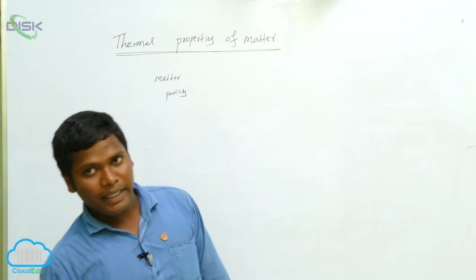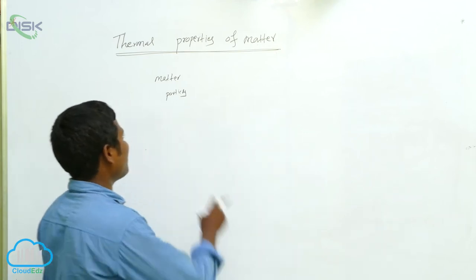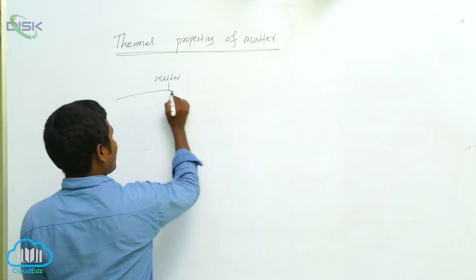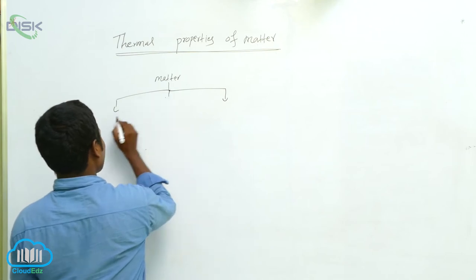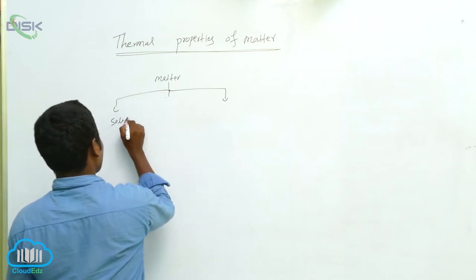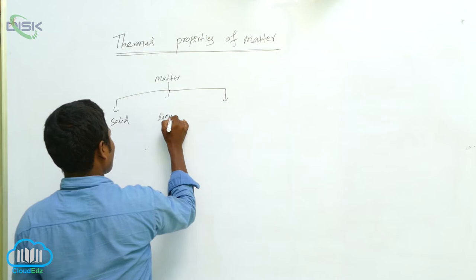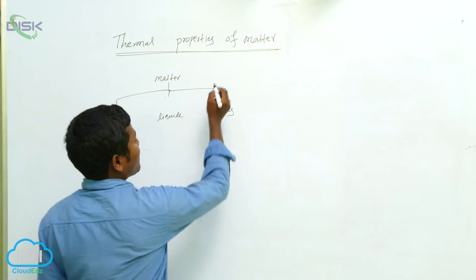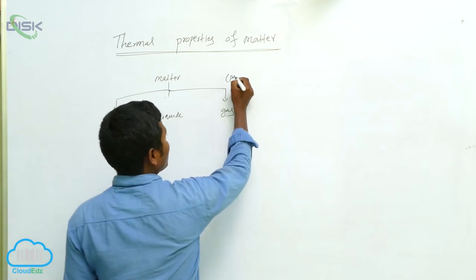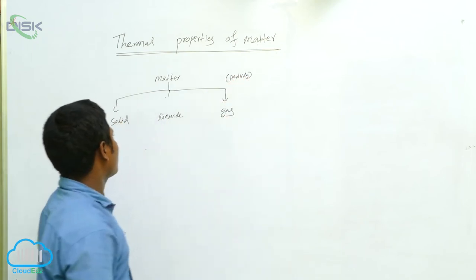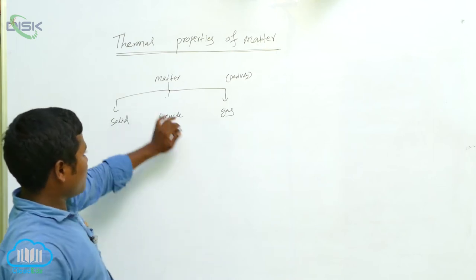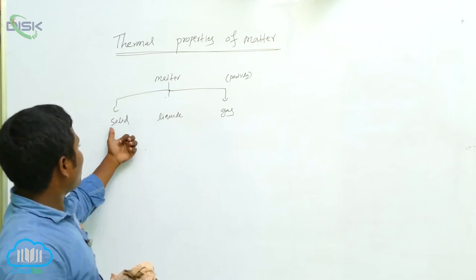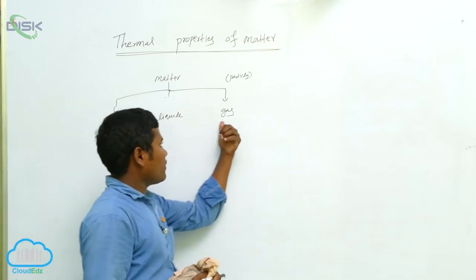The particle arrangement — based on that, the matter can be divided into three parts. Based on which property? Particle nature. So solid is matter, liquid is also matter, and gas is also matter — based on particle nature.